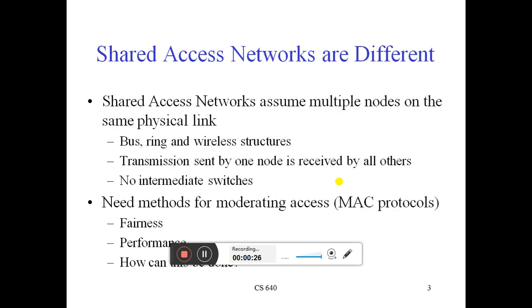The first technique is the shared access network. Different shared access networks are used for different physical layer links, and from that you can connect different multiple nodes of the physical layer. It includes bus, ring, and wireless structures for communication and transmission. Notably, no intermediate switch is required for this control — it is a MAC protocol.